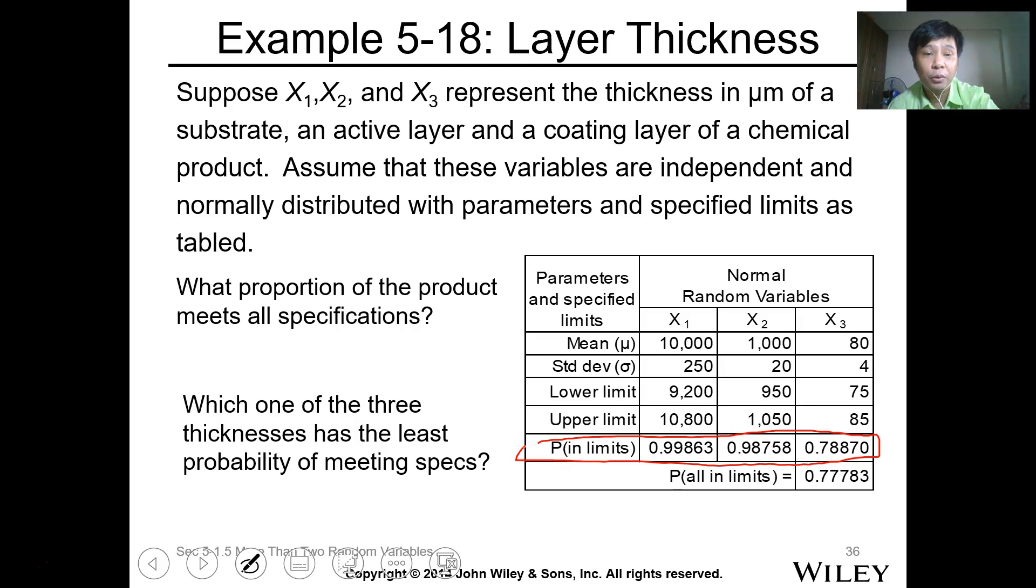We want to get the proportion of the product that meets all specifications. So we just multiply each value. When you multiply these values, the answer is 0.77783, the product of the three layers.